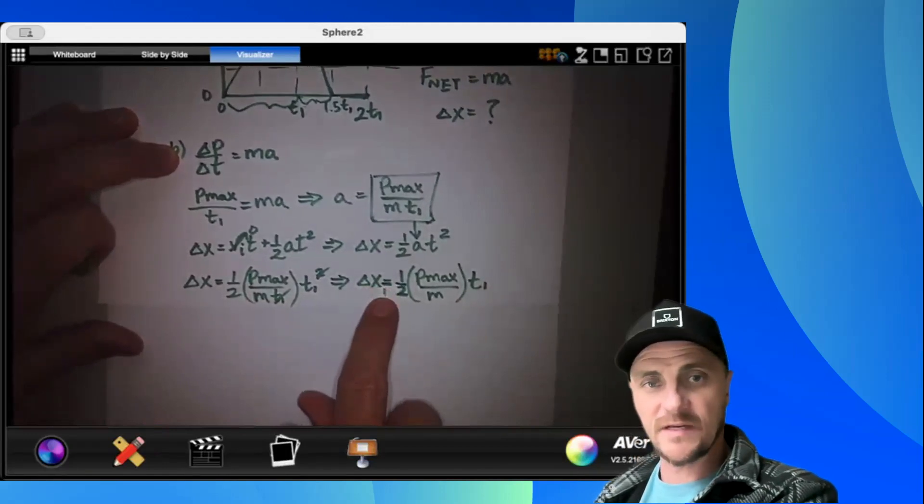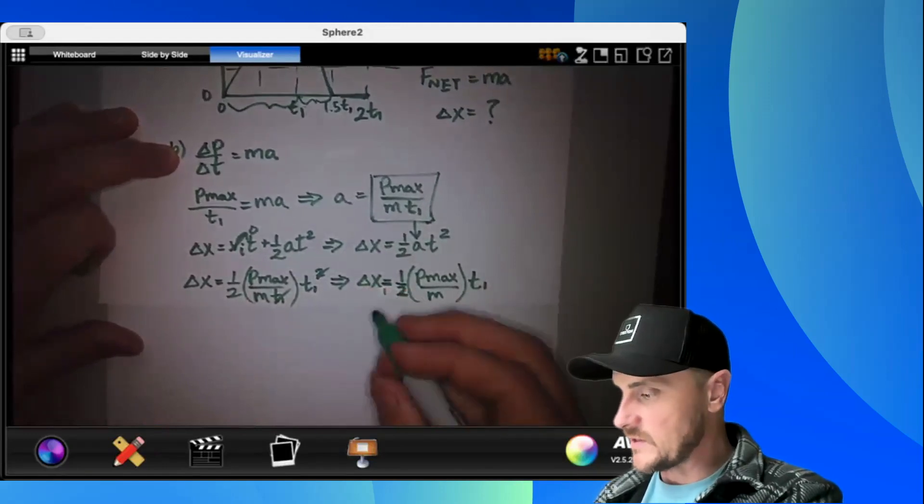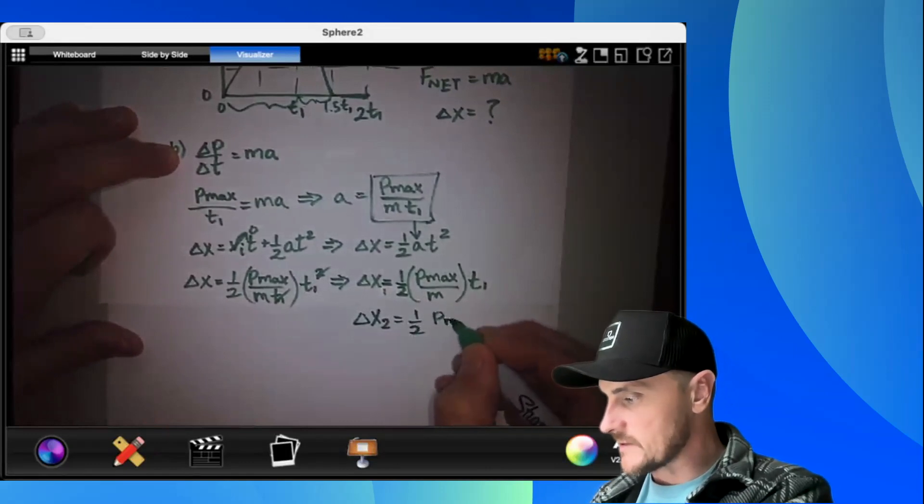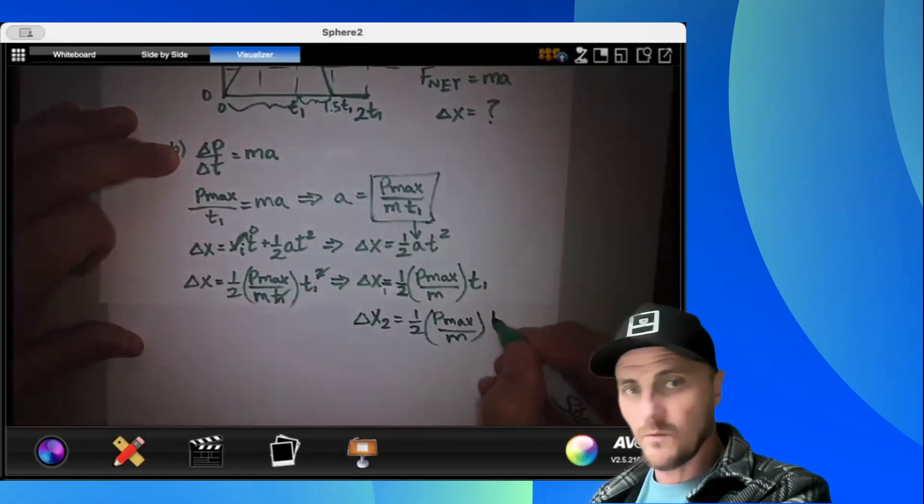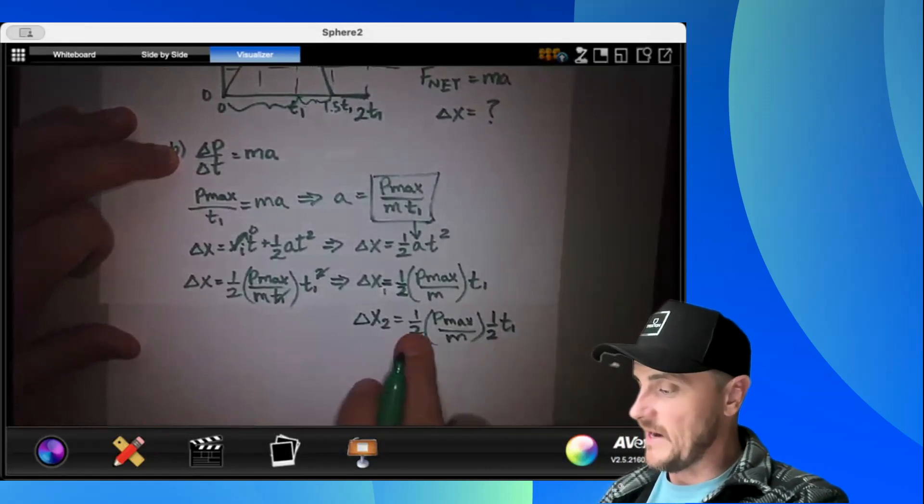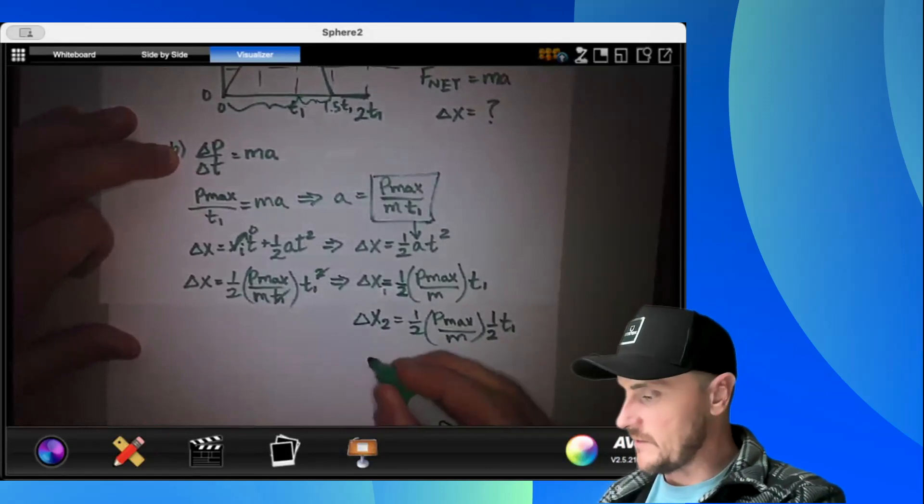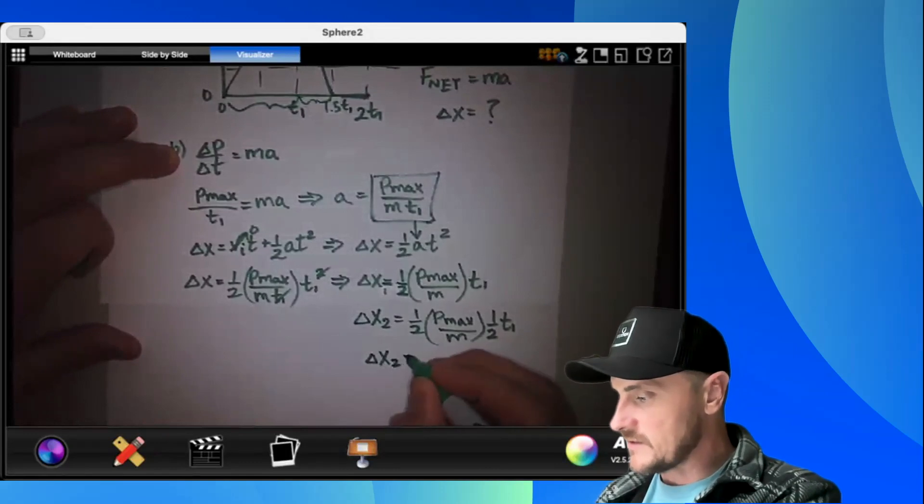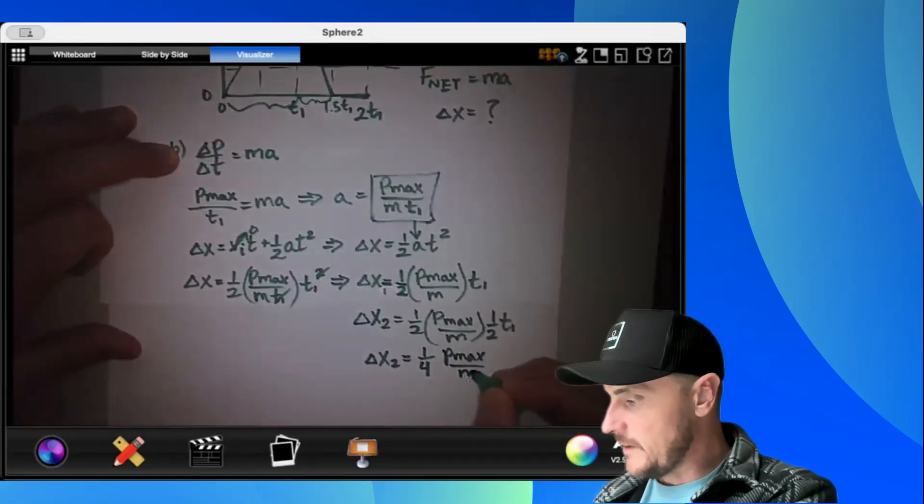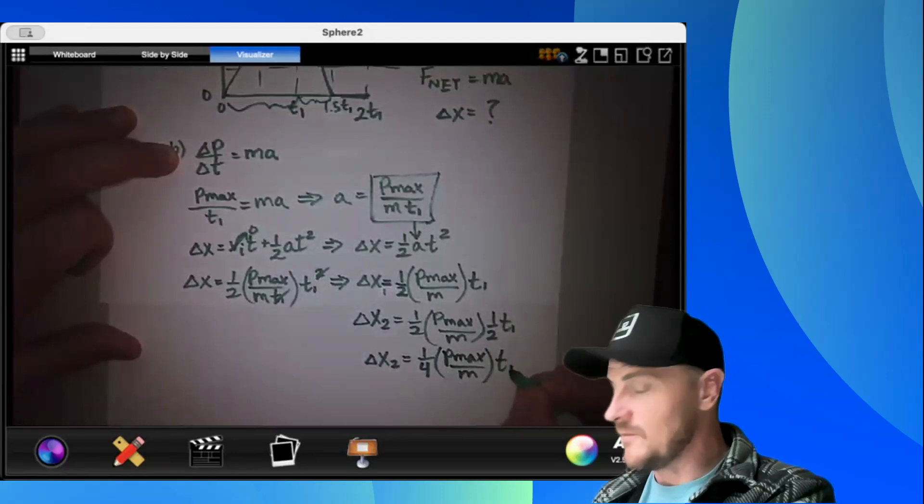So I'm going to call this delta x1, and that's the one we just found. Let's check out delta x2. One half p max over m times one half t1. All right, look at that. So I'm going to take my half and my half. I'm going to multiply those together, and I'm going to get that delta x2 is equal to one-fourth p max over m all times t1.